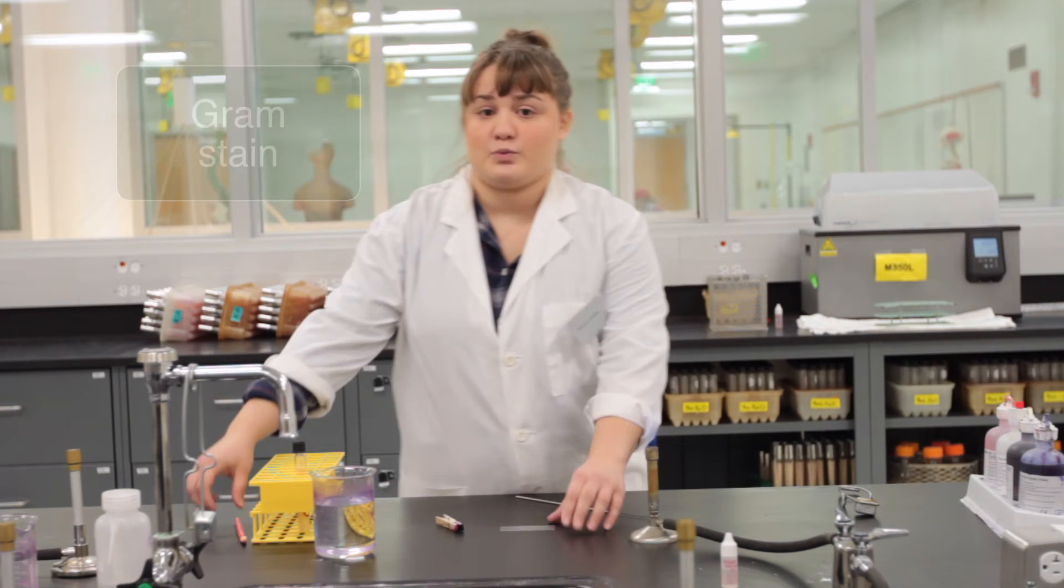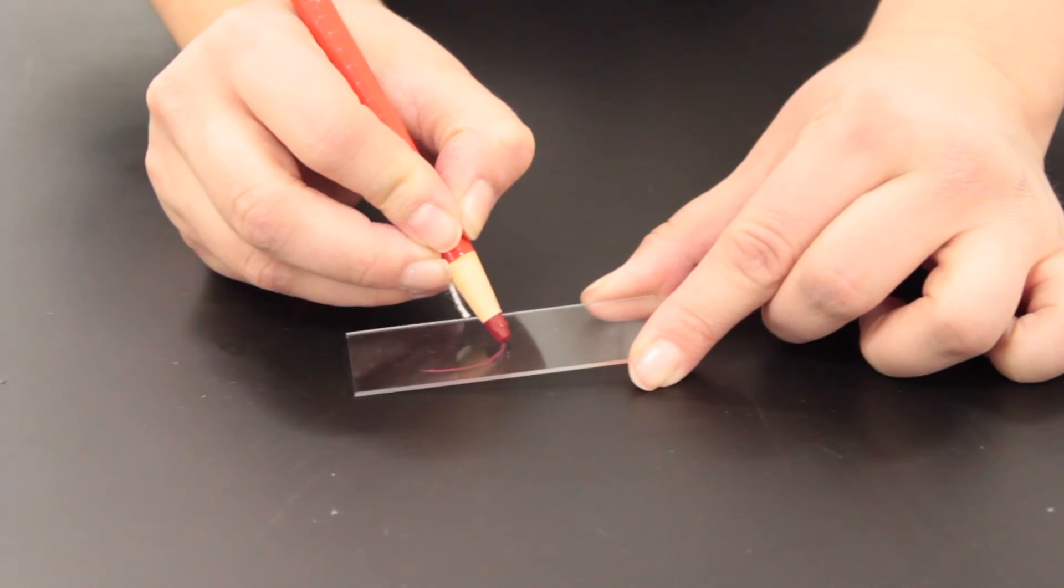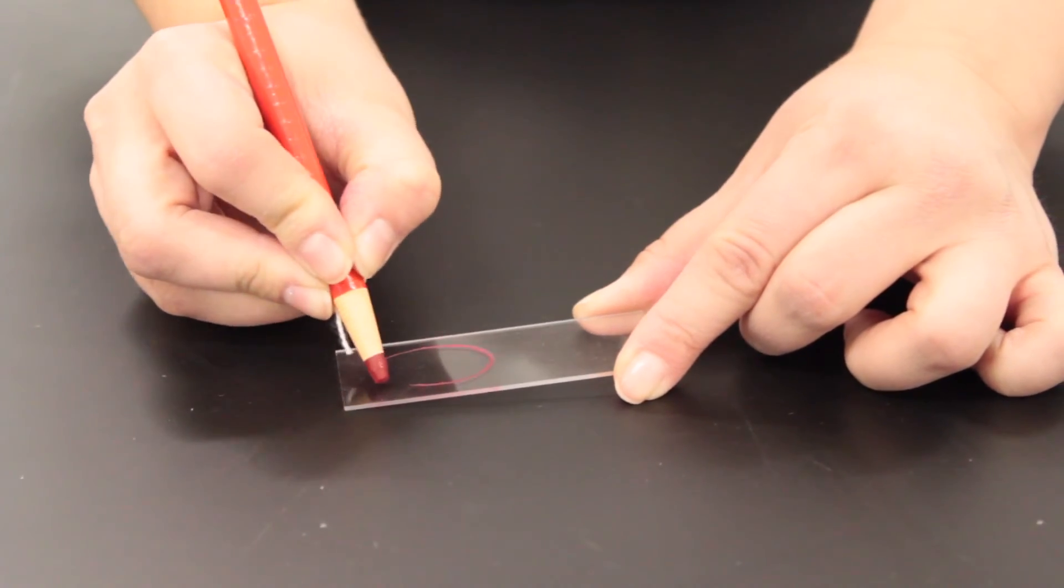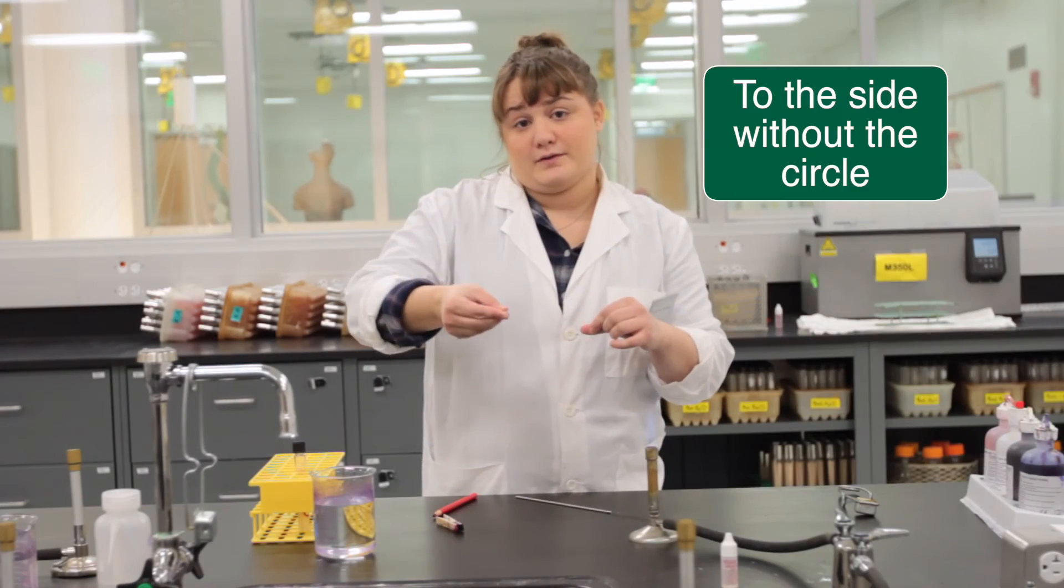First we are going to take our slide and a wax pencil. On the slide we are going to make a circle to denote where the bacteria needs to go, and then we are going to flip the slide over.